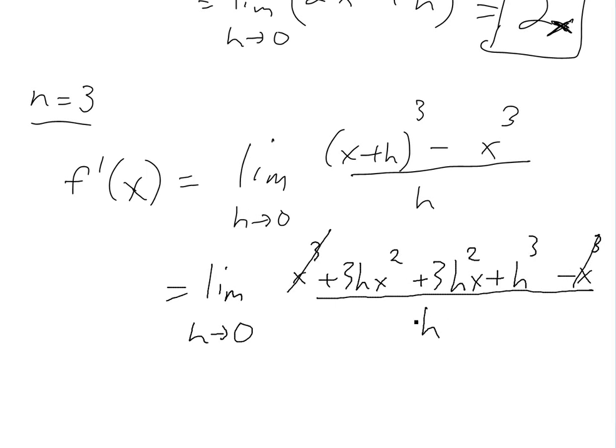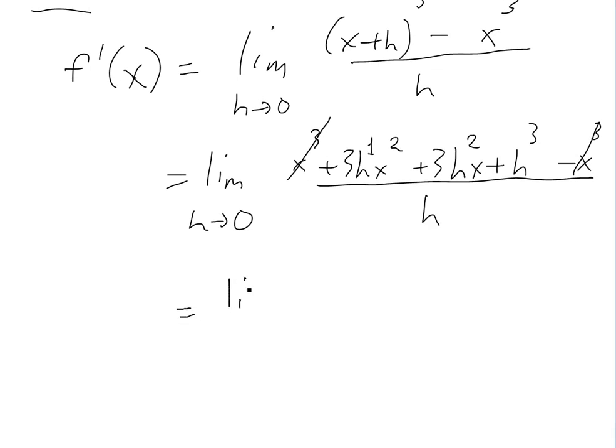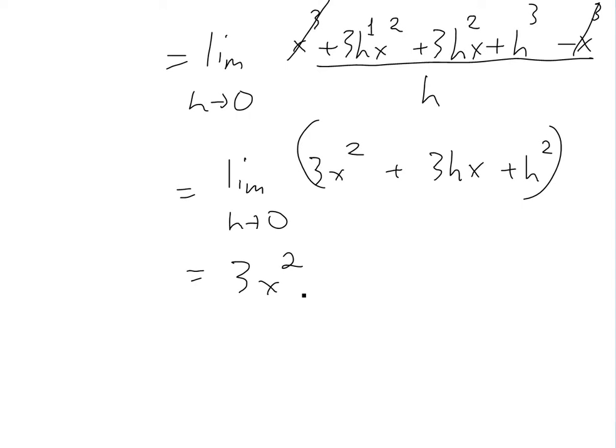And then we divide the h's out everywhere. So again, we see that this is the only one that is h to the power of 1. This is power of 2, power of 3. So we're left with h here. So if we simplify it, it just becomes limit, and this is 3x^2. And this is going to be 3hx + h^2. And then as they go to zero, these just all cancel. We're just left with 3x^2. So that's our derivative.